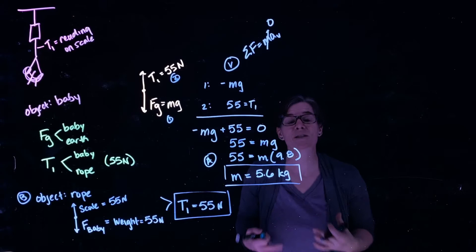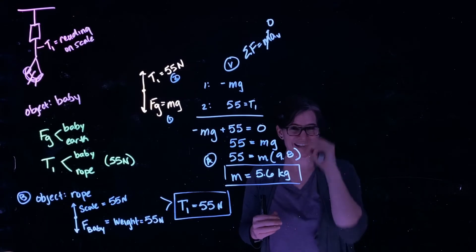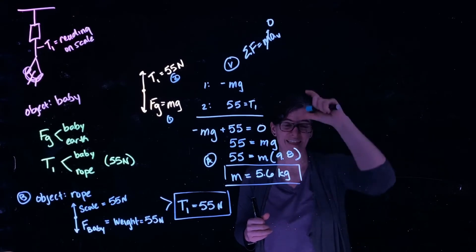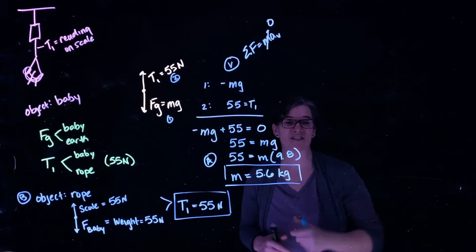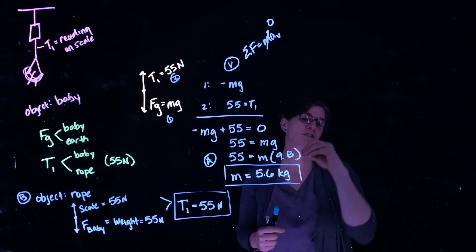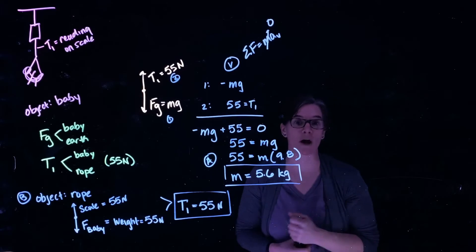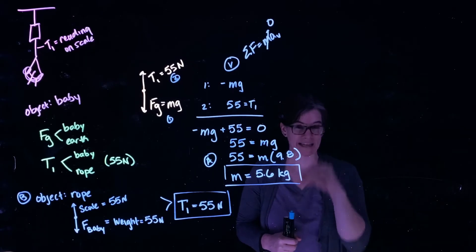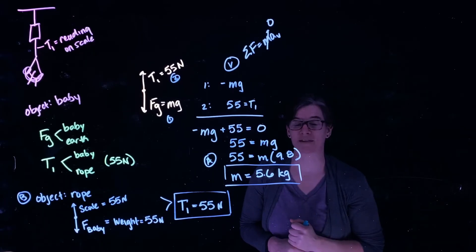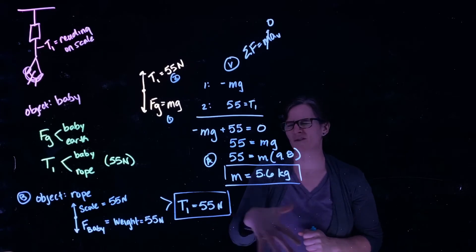We want to think about how a spring scale works: it reads the tension that the spring scale is at, and it reads the tension in the rope attached to the bottom of the scale—the part that's pulling down on the spring. So we knew that tension T1 was 55 newtons for Part B.